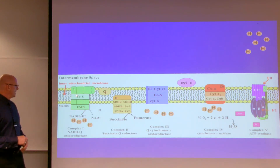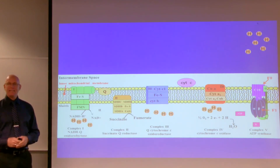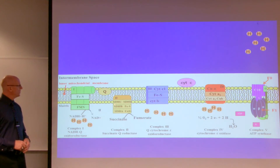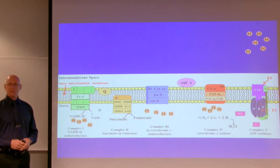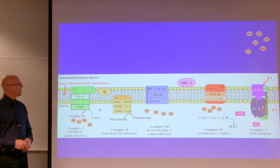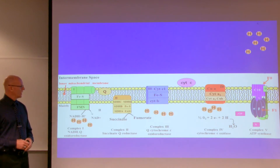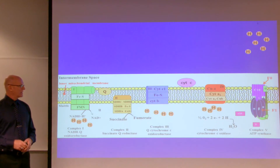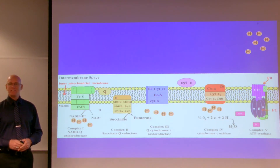Complex 1 is called NADH-Q oxidoreductase, also referred to as NADH dehydrogenase. Complex 2 is succinate-Q reductase, also referred to as succinate dehydrogenase. Complex 3 is Q-cytochrome C oxidoreductase, sometimes referred to as the cytochrome BC1 complex. Complex 4 is cytochrome C oxidase, and complex 5 is ATP synthase.